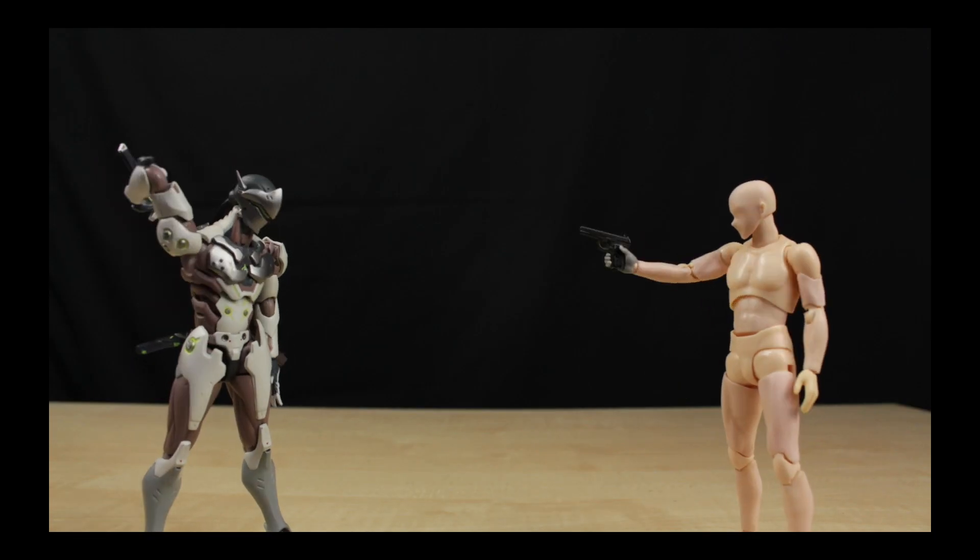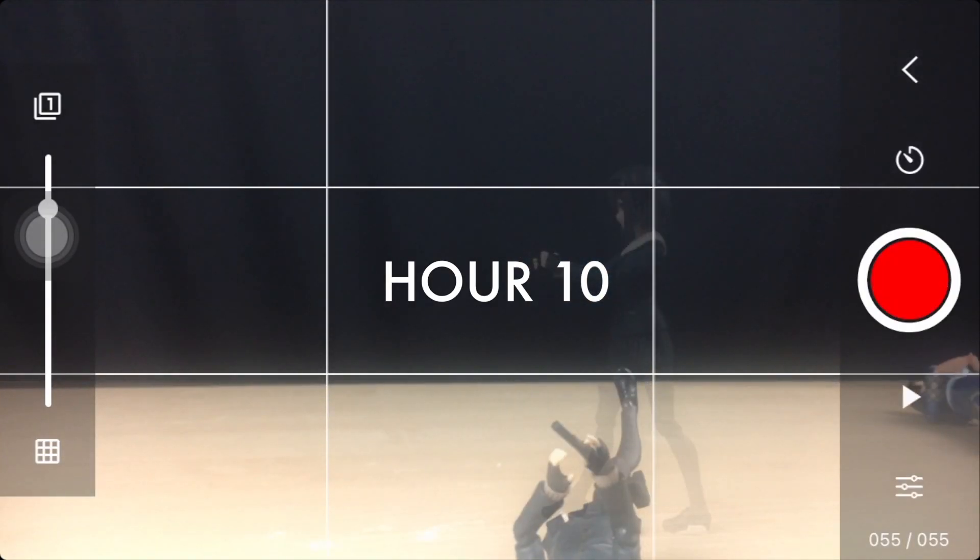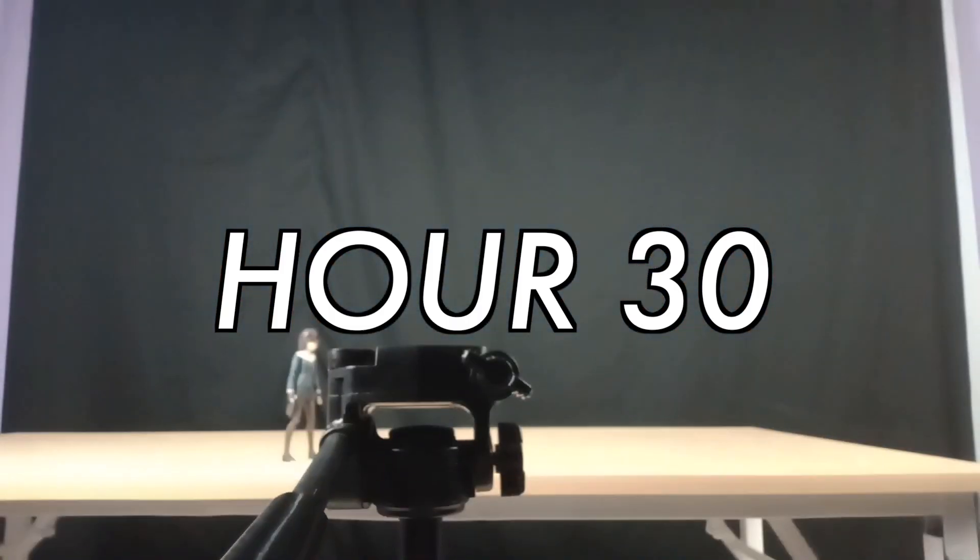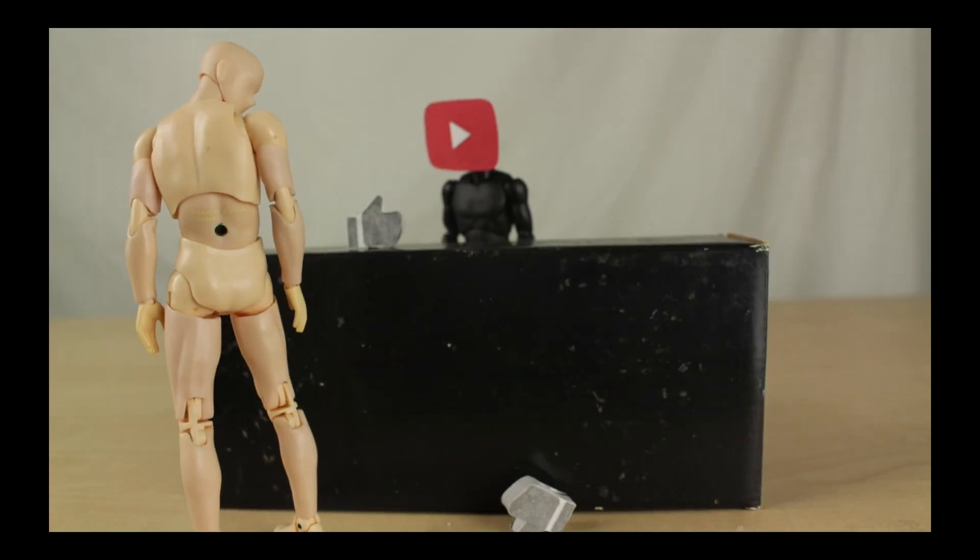This is the part where you, the animator, hone your stop motion craft. And at some point, as you get better and better, you'll also want to demand more and more out of your puppets or object to do for you. In Bodykun's case, his articulation, though it's really great for general range of motion that a human body can do, you will soon find that he will have some precision flaws when posing.